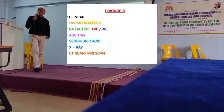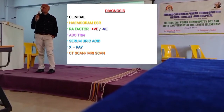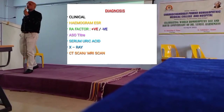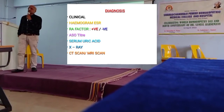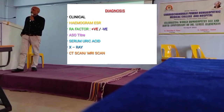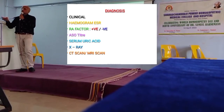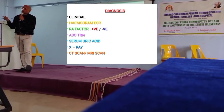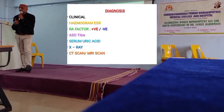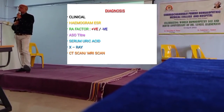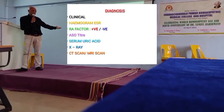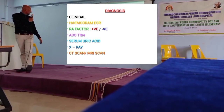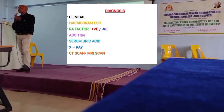Third is the ASO factor - anti-streptolysin O. This is necessary to rule out prior streptococcal infection. The toxins released from streptococcus cause damage to the joints and sometimes to the heart. So ASO factor positive or negative, and its level, matters for diagnosis. Then serum uric acid is important to diagnose the metabolic variety - specifically gout.